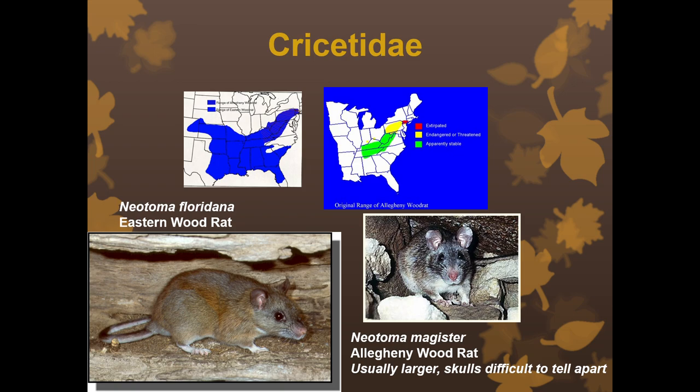Within Cricetidae we also have two wood rats: the eastern wood rat, Neotoma floridana, and the Allegheny wood rat, Neotoma magister. These are pretty hard to tell apart — genetics or range differences are the primary ways to separate them. Even their skulls can be hard to separate. The main way to distinguish wood rats from the black rat and Norway rat is that wood rats do have fur on the tail, like all Cricetidae members.